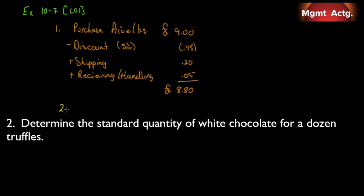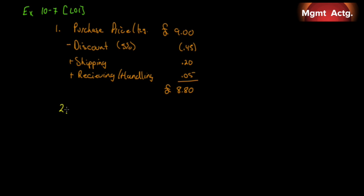Number two. Determine the standard quantity of white chocolate for a dozen truffles. So we're determining the standard quantity per dozen. Always important to keep in mind the unit in which we're trying to determine. Well, our direct materials require 0.8 kilograms. We have waste of 0.02 kilograms. And we have rejects of 0.03 kilograms. So the total is 0.85 kilograms per dozen. Not per unit, but per dozen, and we'll consider the dozen to be the unit.